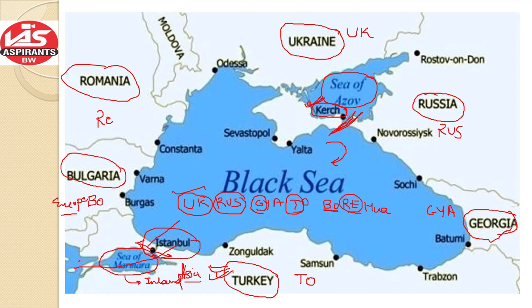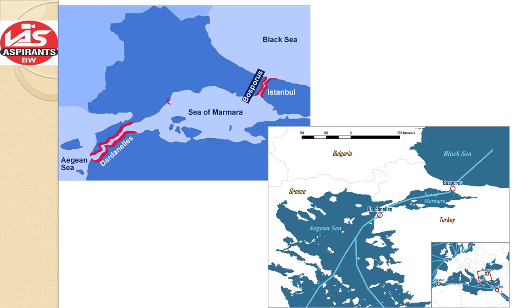Now when we go from the Black Sea to the Sea of Marmara, which strait do we encounter? And when we go from the Sea of Marmara to the Aegean Sea, which strait do we encounter? The Sea of Marmara is connected to the Black Sea through a strait known as the Bosphorus Strait. So if UPSC asks about the Bosphorus Strait, it connects the Black Sea with the Sea of Marmara. The second one is the Dardanelles Strait, which connects the Sea of Marmara with the Aegean Sea. You can see here — Bosphorus Strait goes from Black Sea to Sea of Marmara, and after Sea of Marmara, the Dardanelles Strait connects it to the Aegean Sea.